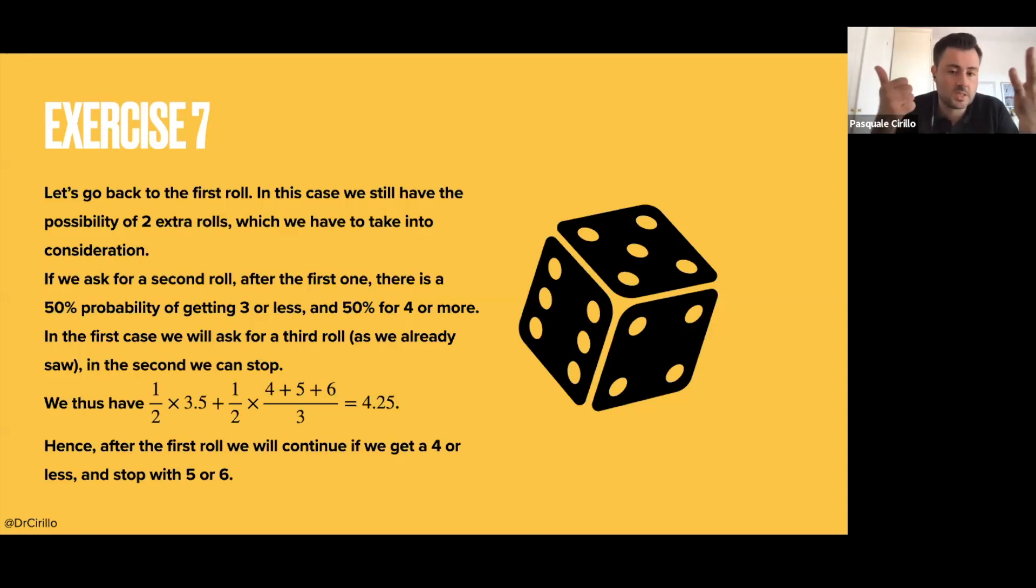So the probability that I observe 3 or less for me is 1/2, because I have just 6 possibilities, and 3 or less is half of the possibilities. So 1/2 times the expected return of the second toss, because I have observed 3 or less, so I will move to the second toss, plus 1/2, the opposite situation. That is to say, I have observed in my first toss 4, 5, or 6. So if this is the case, what happens? If I observe 4 or 5 or 6, I have a higher return. So it's 1/2 the return I can expect in the second toss if I have something that makes me stop.